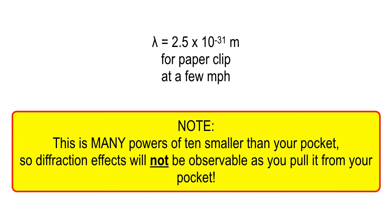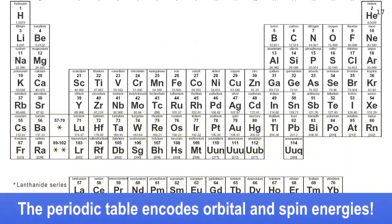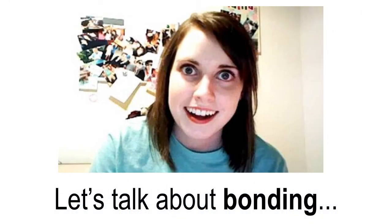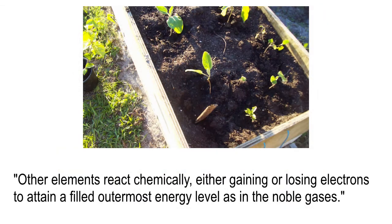This idea of waves, standing waves, orbits, and energies is all encoded in the periodic table. We've been talking about the periodic table, so let's talk about bonding — how atoms bond together into molecules. Elements react chemically either by gaining or losing electrons. Some atoms like sodium are easily ionized — the outer electron is easy to steal — while the other side of the periodic table, like fluorine or chlorine, is a really effective thief of electrons.